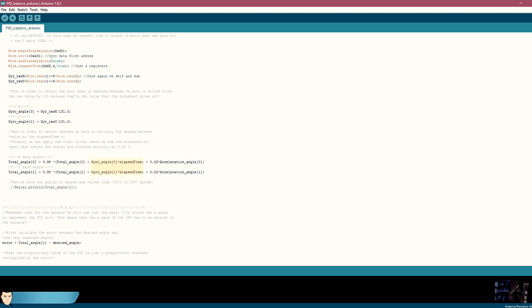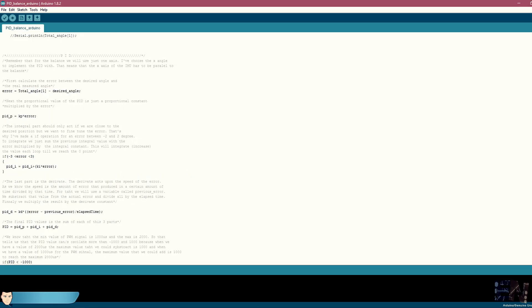Finally, we calculate the real total angle applying the complementary filter between the gyro angle and the acceleration angles. Here we start the PID control. Remember that we will use just one angle because this is a one axis test.